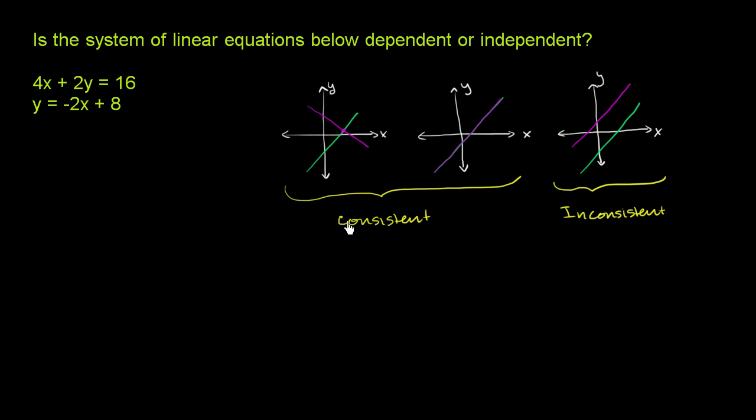But then within consistent, there's obviously a difference. Here we only have one solution. These are two different lines that intersect in one place. And here, they're essentially the same exact line. And so we differentiate between these two scenarios by calling this one over here independent, and this one over here dependent.